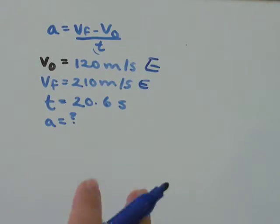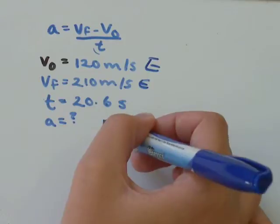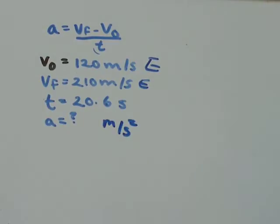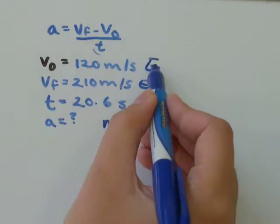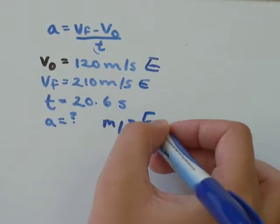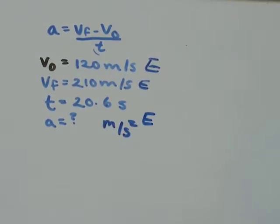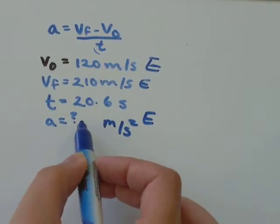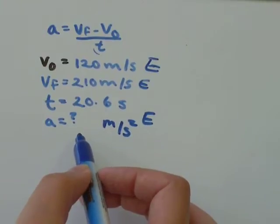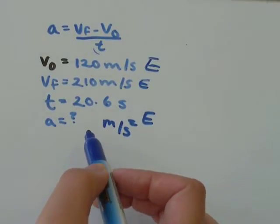Remember, acceleration is measured in meters per second squared. Acceleration is a vector, so it has a direction. Our velocities are both going east, so our acceleration is going to be going east as well. Our units are pretty easy to figure out. We just need to know what the number is, what the speed of our acceleration is.